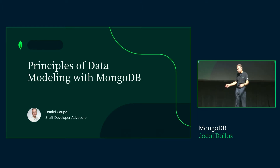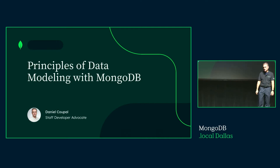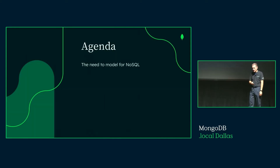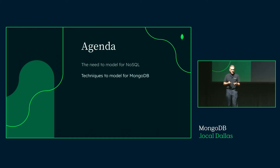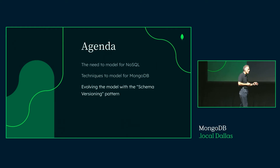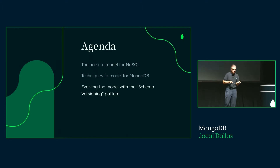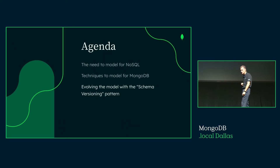I've worked on a lot of things related to data modeling. You probably know my name from the MongoDB University class or all the blogs I've written on the subject. I'm really passionate about everything data modeling with MongoDB. I'm going to divide the presentation into three segments. First, we'll talk about the need to model for NoSQL. Then we'll introduce a simple methodology you can follow to guide all you do when modeling for MongoDB. And finally, I'll dig into one design pattern called schema versioning — that's my favorite pattern and I think it's one of the most underrated features of MongoDB.